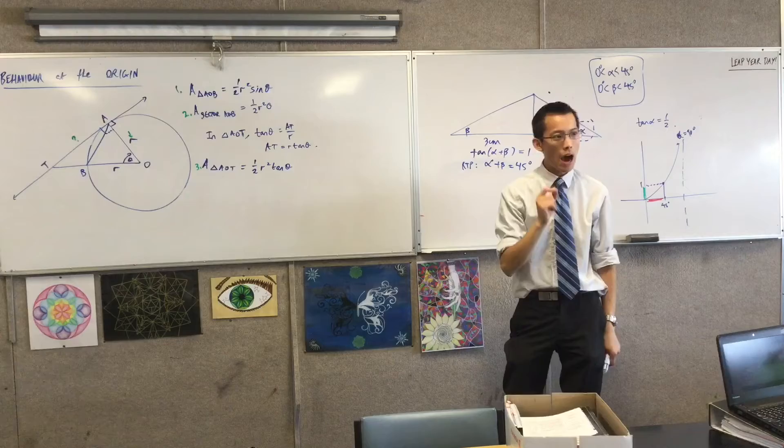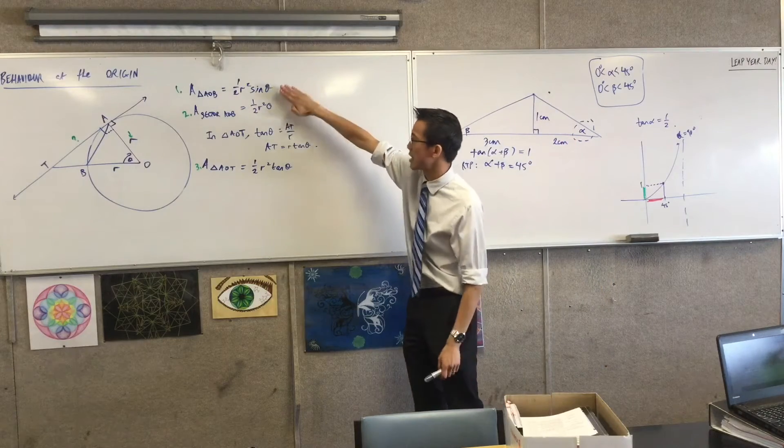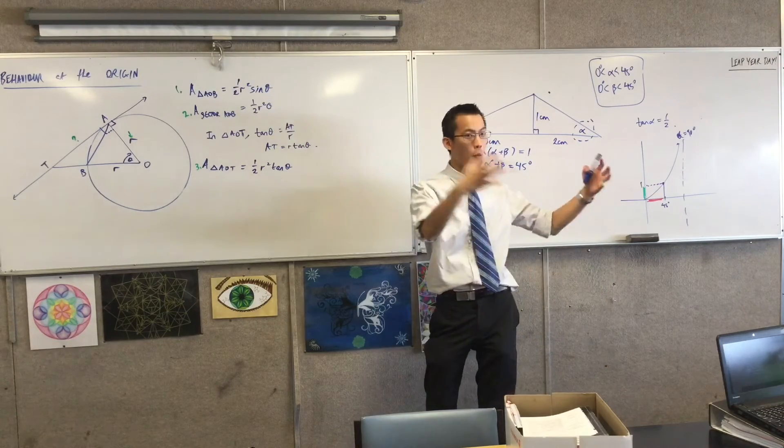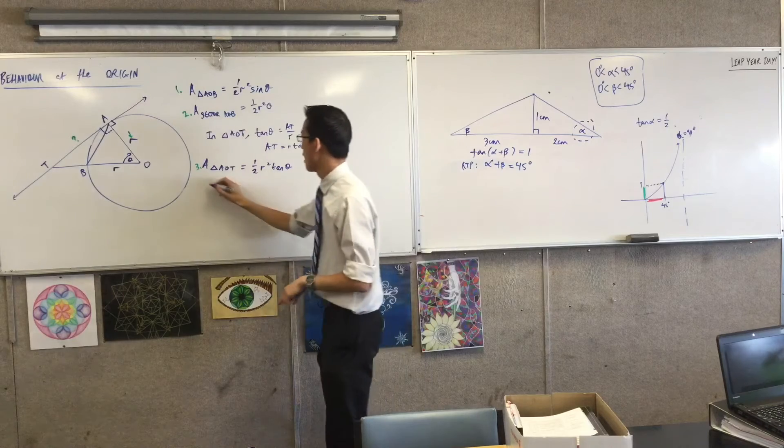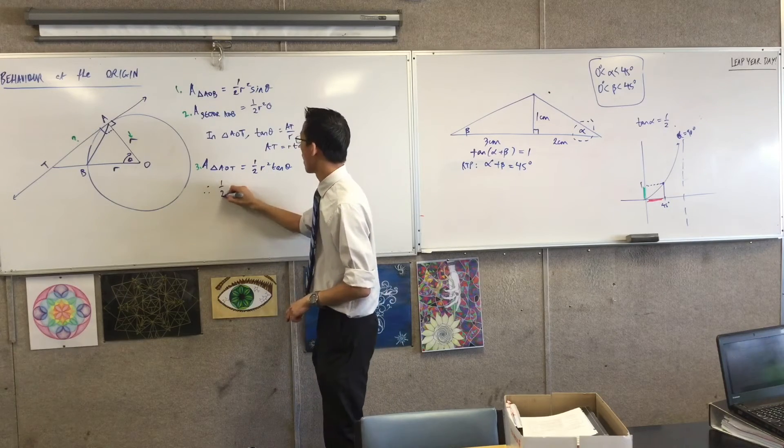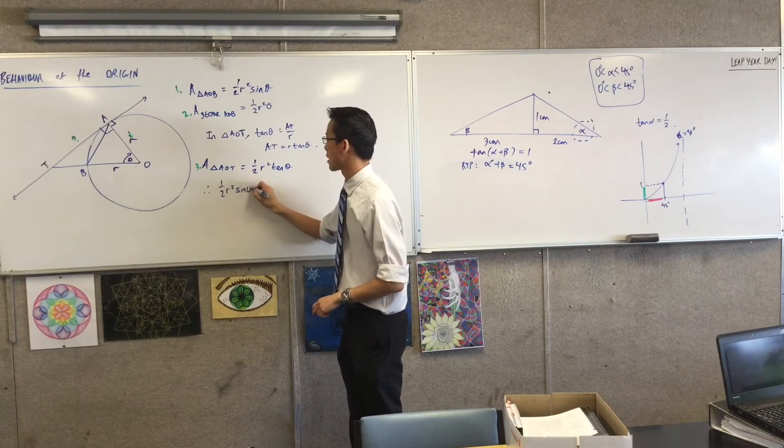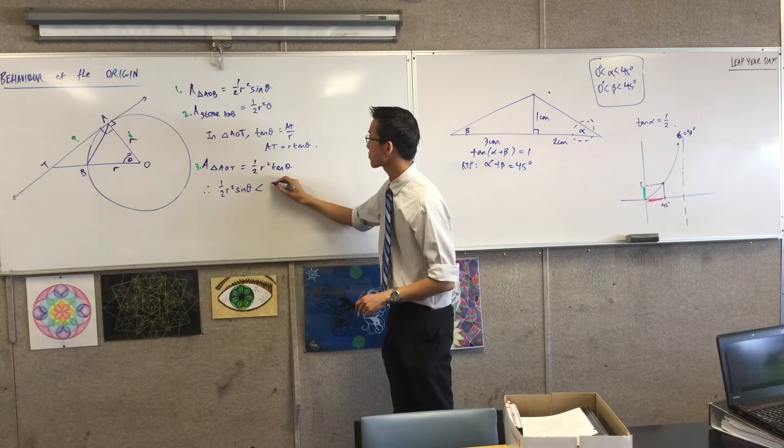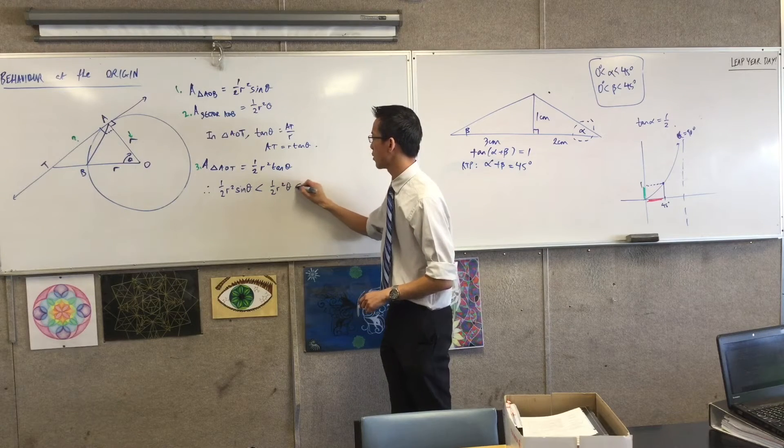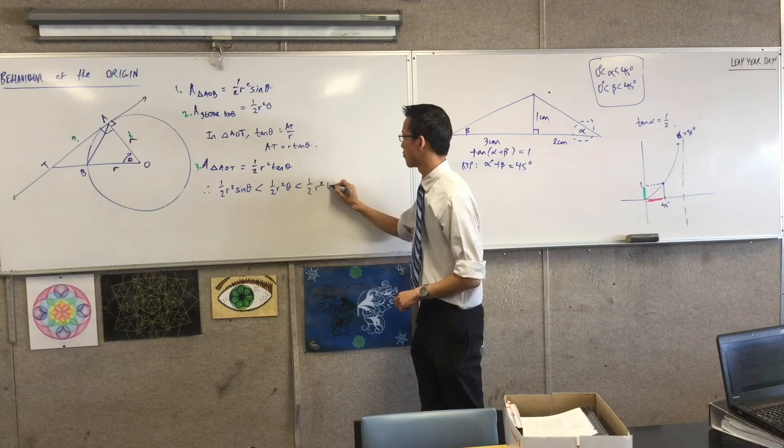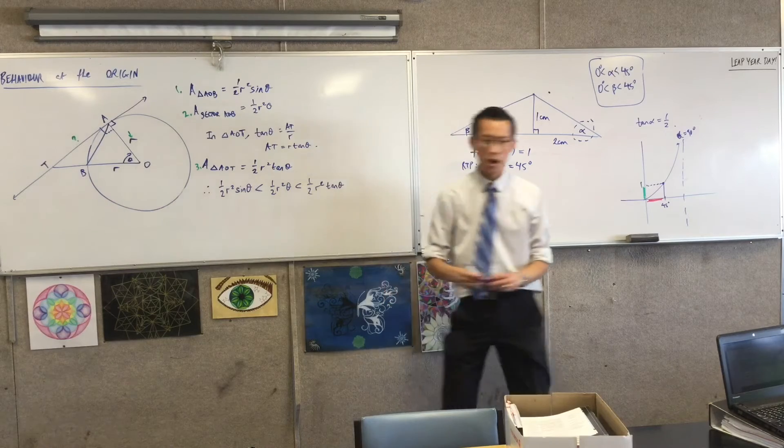So therefore, I can say, because this is less than this, which is less than this, I can form one big inequality with all of these. I can say, therefore, half R squared sine theta is less than half R squared theta, which is less than half R squared tan theta.